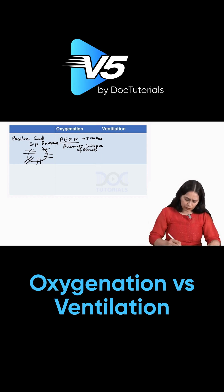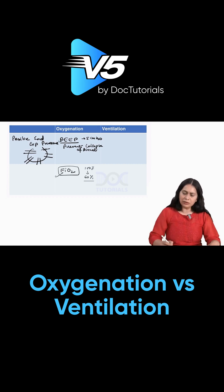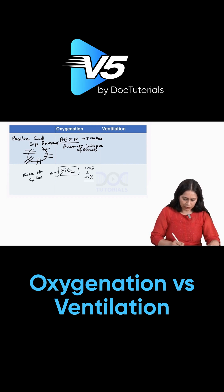The other way to improve oxygenation is by increasing the FiO2. We start with 100% oxygen and try to decrease it to 60% as soon as possible. We titrate between PEEP and FiO2, because giving very high FiO2 carries a risk of oxygen toxicity.